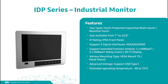DFI IDP Series monitors have two types of touch technologies — PCAP touch and resistive touch — to choose from for different situations. The sizes of the IDP Series are available from 7-inch to 15.6-inch displays. It can also be applied for rugged applications with a robust front panel design rated with IP65 protection level. This series supports four signal interfaces: VGA, DVI, HDMI, and an Extend Function module.